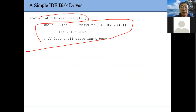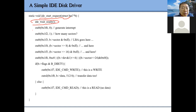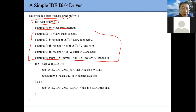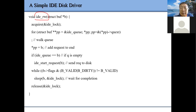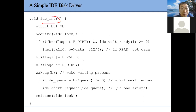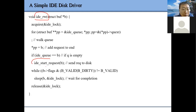We call a function to wait until the device is ready, then generate an interrupt. We set up those registers and do either the write operation or read operation. This start-request function is part of our read/write operation or our interrupt handler.